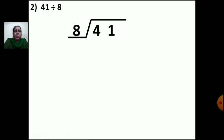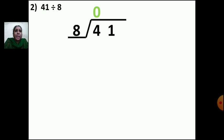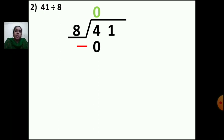Now let us do the second sum. The question is 41 divided by 8. Write the dividend 41 inside and divisor 8 outside. Take one number first: 4 is small, 8 is big, so you cannot divide. You have to put 0 first. Take 8 zeros, which is 0 — smaller than 4. Write 0 below 4. Put the minus sign, draw the line, and subtract: 4 minus 0 gives 4.